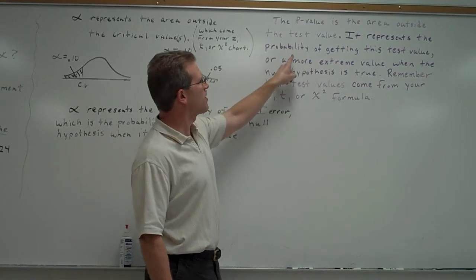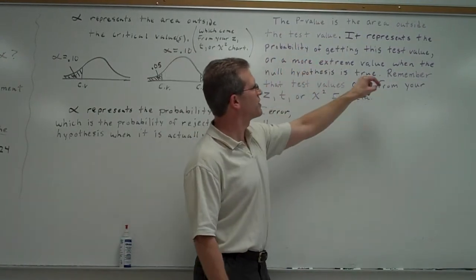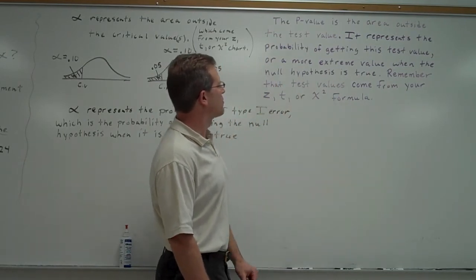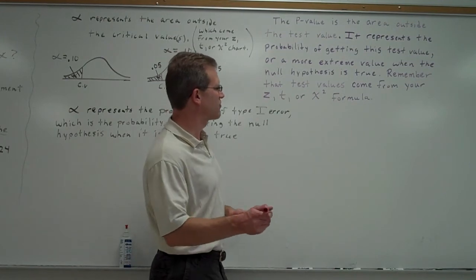It represents the probability of getting this test value or a more extreme test value when the null hypothesis is true. Remember that test values come from your Z, T, or chi-squared formula.